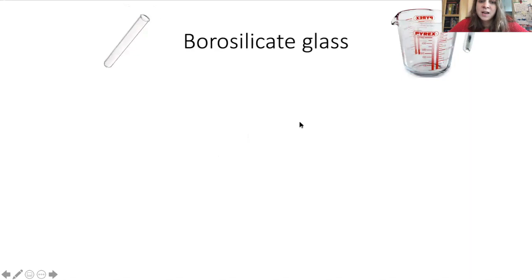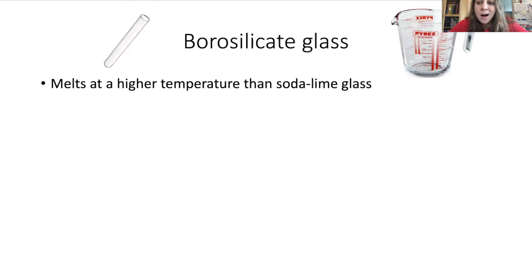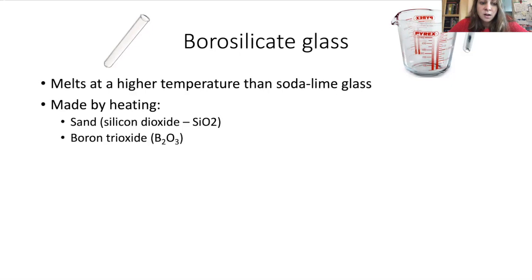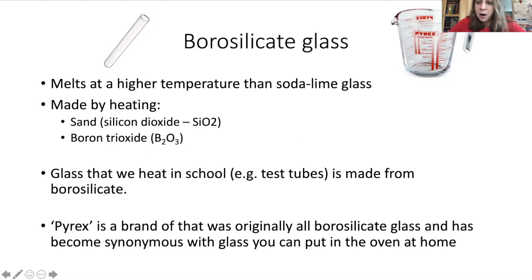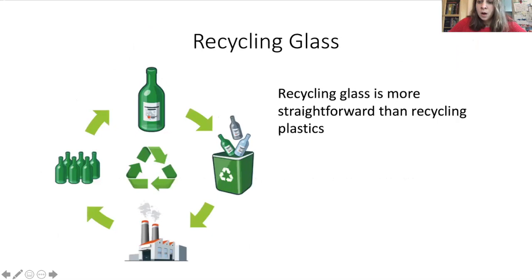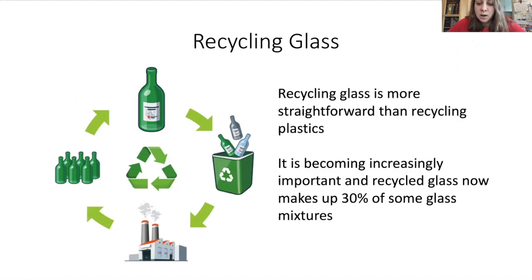The other type of glass you need to be aware of is borosilicate glass. Borosilicate glass is quite useful because it melts at a much higher temperature than soda lime glass. The basic component is sand - the silicon dioxide - but we add boron trioxide to it. Tri means three, so it's three oxygens joined onto our boron. When we have glassware in school - our test tubes, our boiling tubes - those are all made from borosilicate. If you tried to put your drinking glasses into a Bunsen burner flame, they would just shatter. You might have come across Pyrex - that's actually a brand name, but it's become synonymous with glassware you can put in the oven. Recycling glass is more straightforward than plastic, so it's done quite widely, and recycled glass now makes up about 30% of glass mixtures.